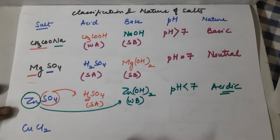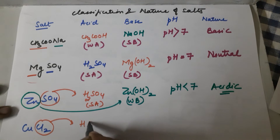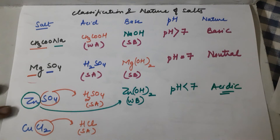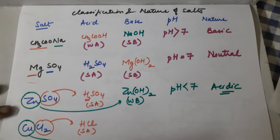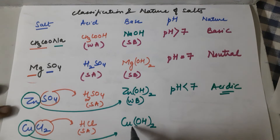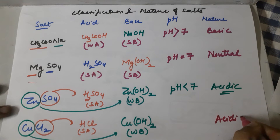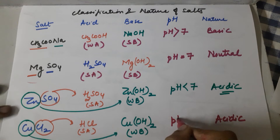Next example: cupric chloride, CuCl₂. The anion Cl⁻ gives the acid HCl — a strong acid. The cation Cu²⁺ — copper has a common valency of 2 — gives the base Cu(OH)₂. Copper is a very less reactive metal, so the base formed is also a weak base. A strong acid combined with a weak base gives an acidic salt, so the pH is less than 7.